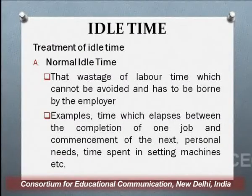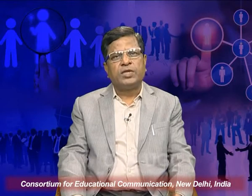Normal idle time is that waste of labor time which cannot be avoided and has to be borne by the employer — it is idle time that is bound to arise. For example, when a worker enters the factory and walks to the department, it takes 10 to 15 minutes if the factory is large — you can only minimize it, you cannot avoid it. Personal needs, like going to the washroom once or twice during 8 working hours, are very normal. Examples include time elapsed between completion of one job and commencement of the next, personal needs, and time spent in setting up machines.